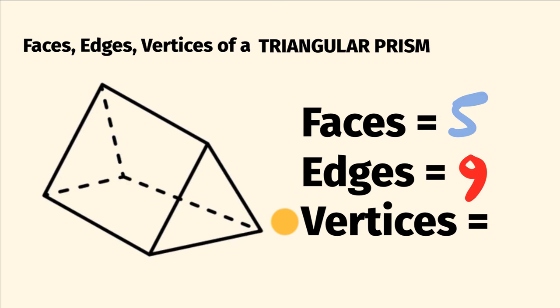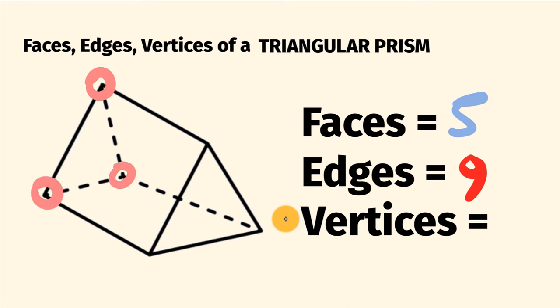So finally, to the number of vertices — these are the corners, the sharp bits. So let's go through and count these. On the back here, we have one, two, three vertices. And here, we have one, two, three vertices. All together, a triangular prism has six vertices.